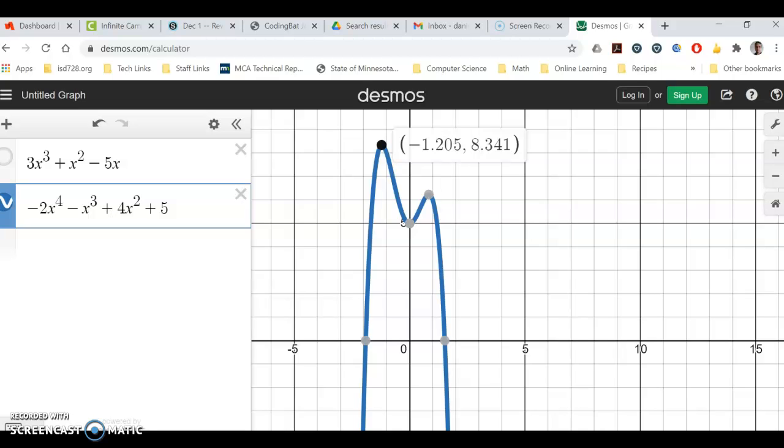The other max, if I did it like I do on the test, it would be about X equals 1 and Y about 6. And again, on Desmos you can just click it. So this one has two relative maxes.